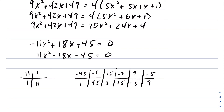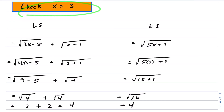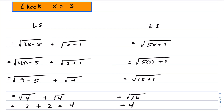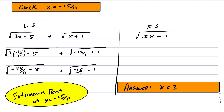If you haven't seen charting, I'll link that in the top right-hand corner. Using charting, we get two columns where the product of the diagonals is negative 18, and this factors to give two values of x: x equals 3, and x equals negative 15 over 11. Checking x equals 3 in the original equation, the left-hand side gives 4 and the right-hand side gives 4, so x equals 3 is a solution. Checking x equals negative 15 over 11, the function is immediately undefined on the left-hand side — we have a negative under the square root for both terms, so the equation is undefined there. Therefore, x equals negative 15 over 11 is an extraneous root, and the answer is x equals 3.